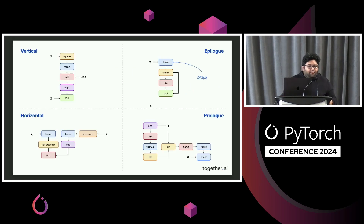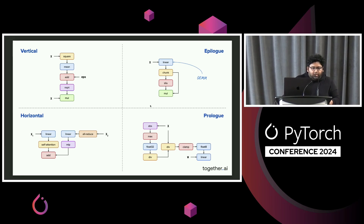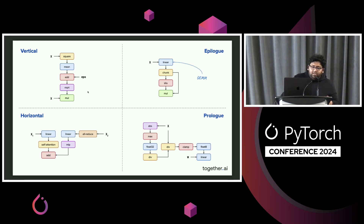There are four types of fusion I want to cover, as these are one of the key advantages in how we move up the roofline chart. First, vertical fusion: you have a chain of series ops — for example, RMS norm — where you're essentially chaining these operations with a lot of reads and writes in between that you can fuse together. Then there's epilog fusion, which typically follows a GEMM, and is representative of a SwiGLU or part of SwiGLU.